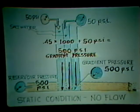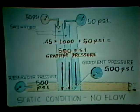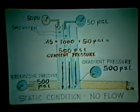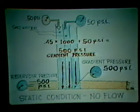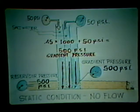The well in this static condition is standing full of water in both the tubing and the casing. There is 50 psi pressure on both the tubing and the casing, and at the bottom of the hole, there is the 50 psi tubing head pressure plus the gradient pressure. The gradient pressure equals 450 psi over a thousand foot depth, meaning there is exactly 500 pounds at the bottom of the hole, because 0.45 times 1,000 plus 50 equals 500. This 500 pounds held against the producing reservoir exactly equals the static reservoir pressure; therefore, no flow can occur.